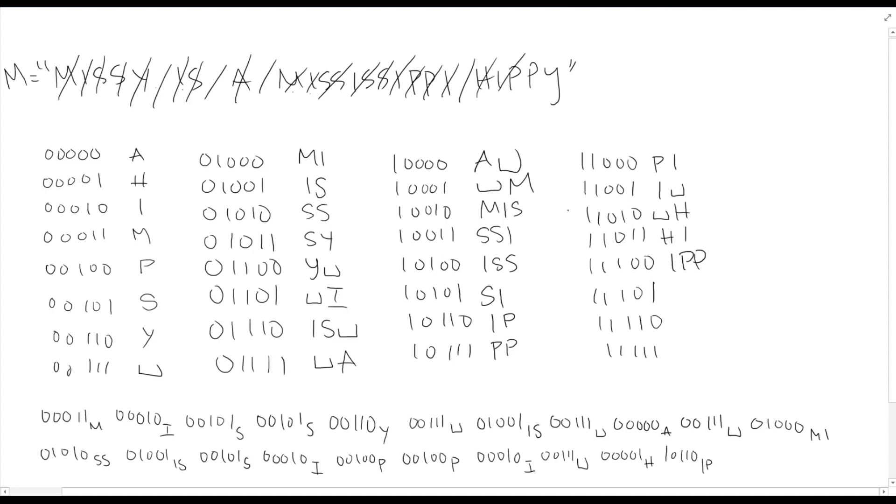And now we have PY. PY hasn't been encountered before, so we'll add PY in here. We'll encode our P, which is just a four. And then we have to finish off by just encoding our Y again. This is our second Y, but we have to encode it as a single character, 00110 Y.